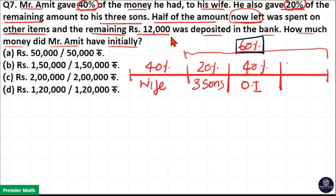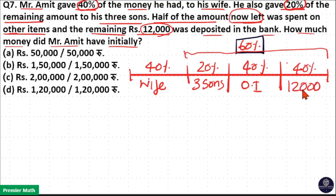The remaining ₹12,000 was deposited in the bank. That is, the remaining 40% equals ₹12,000, which is deposited in the bank. You can see 60% of 40% is ₹12,000, and 60% of 40% he spent on other items.